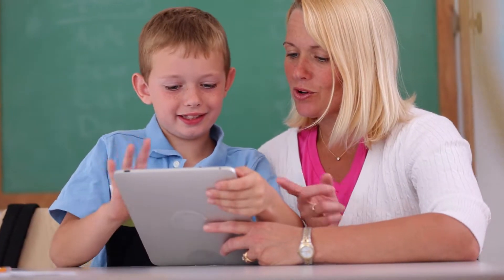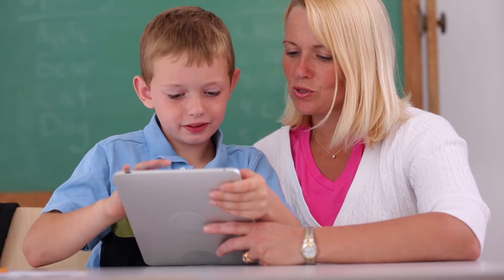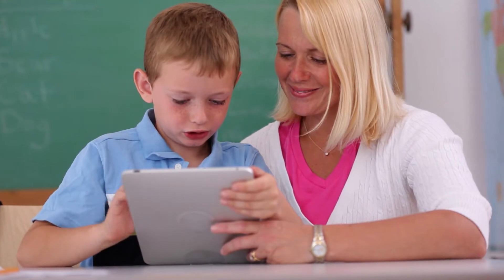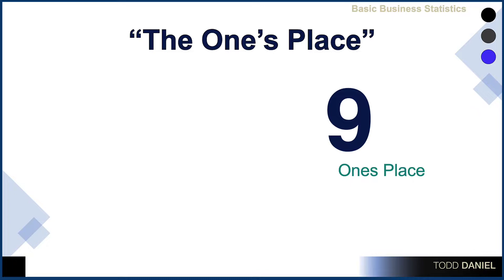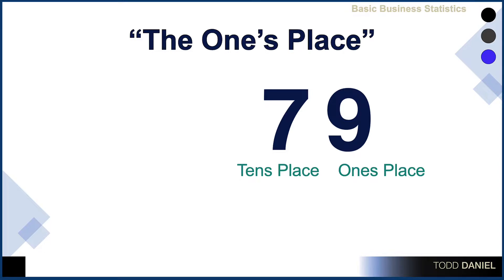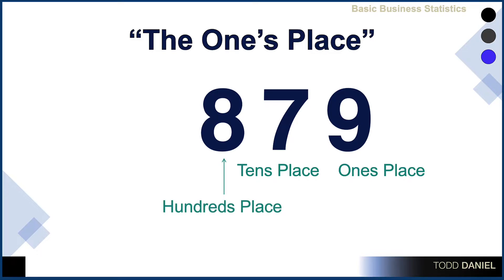As children, we learn counting using numbers one through nine — a single number having a value in the ones place. If we only have nine digits, we're limited to counting only numbers one through nine. But with the invention of zero, we are able to extend our counting by adding a second number in the tens place, giving us a two-digit number and allowing us to count up to 99. Once we reach 99, we can extend our counting by adding a third number in the hundreds place, and then a fourth number in the thousands place.